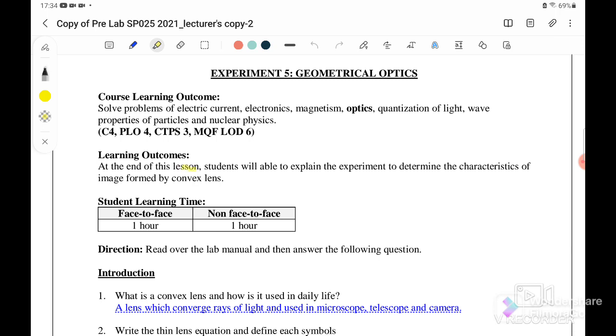So the learning outcome: at the end of this lesson, students will be able to explain the experiment to determine the characteristics of the image formed by convex lens.